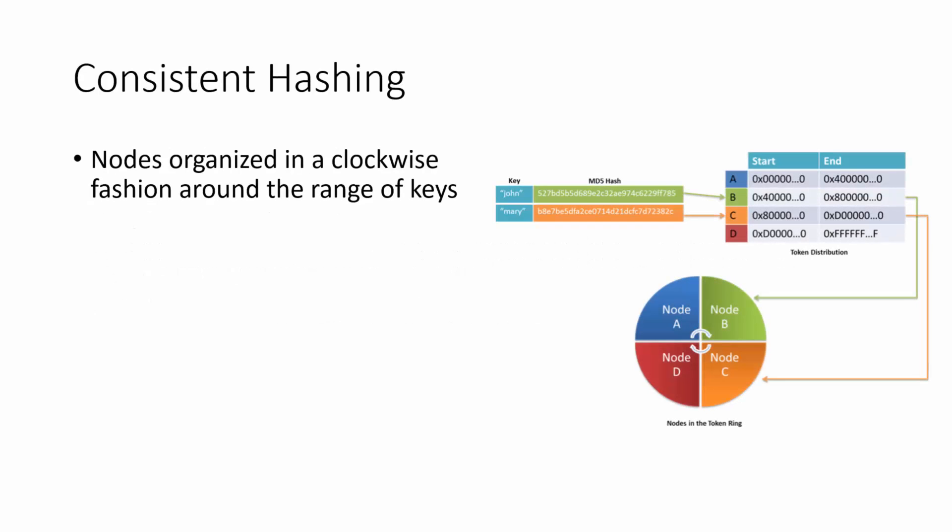In consistent hashing, the nodes are organized in a clockwise fashion around the range of keys, so each node will be responsible for a specific subset of the range of keys. In this example, we see four nodes A, B, C, and D arranged in clockwise fashion. The entire range value of hashes are distributed across the nodes, and for individual keys they will be hashed typically using an MD5 or SHA-1 hash.